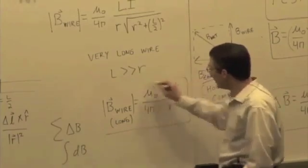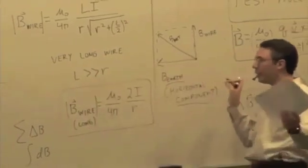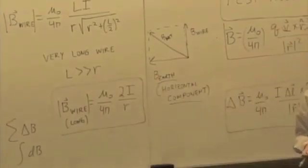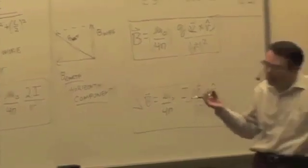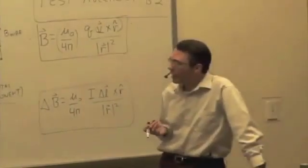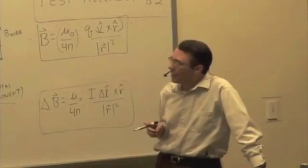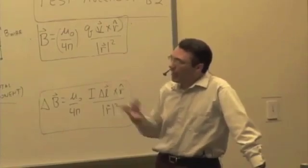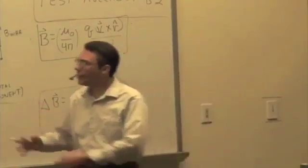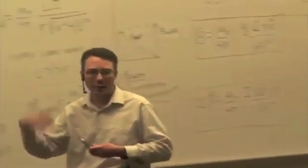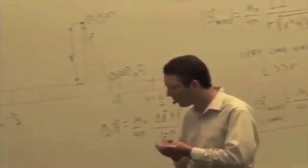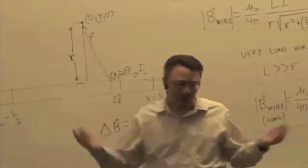So you get a 1 over R distance dependence for a very long, thin wire, just like we got a 1 over R distance dependence for the electric field of a long, thin, charged rod. So the geometry is kind of similar. But we have a nice formula for the magnitude. The magnitude, the direction then would come from the right-hand rule, and you should be able to then predict what the vector would be at a particular location.